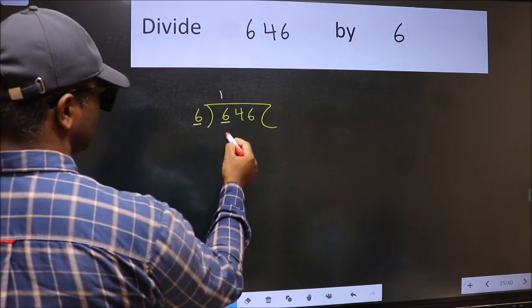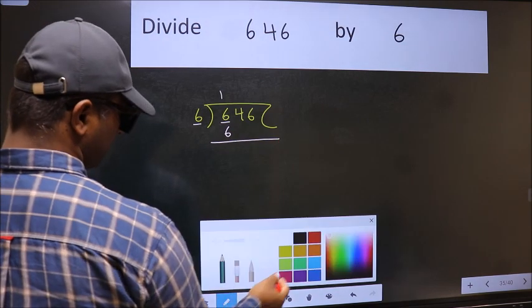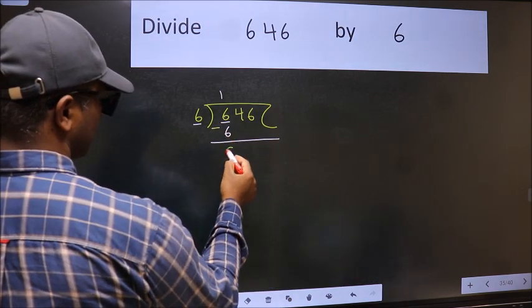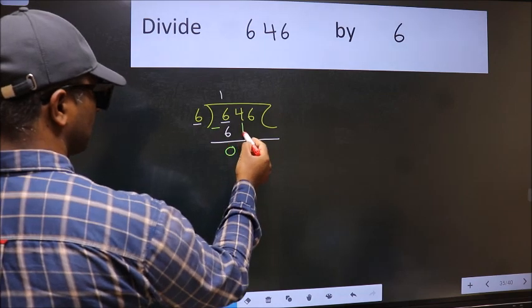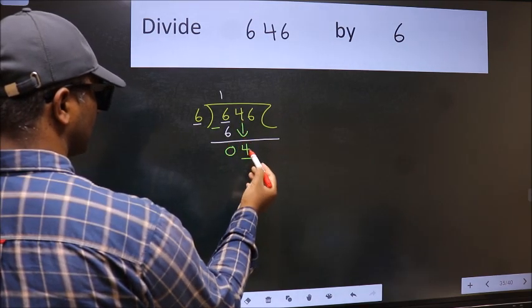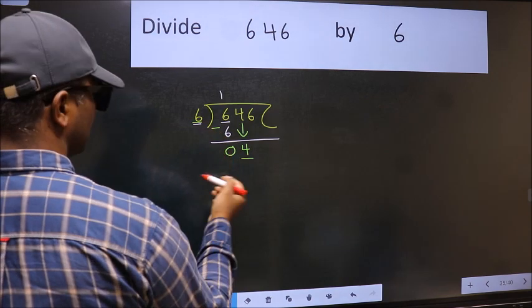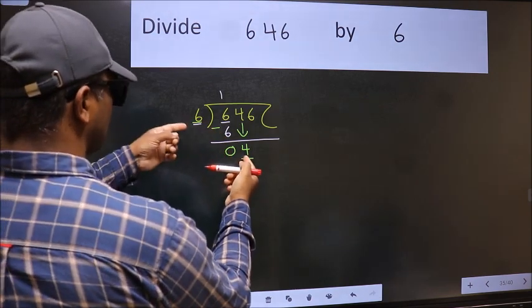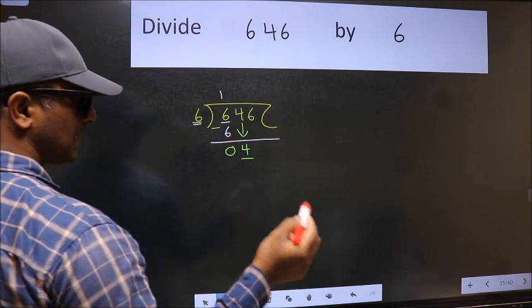6 times 1 is 6. Now we should subtract. We get zero. After this, bring down the beside number, so bring 4 down. Now here we have 4 and 6 here. 4 is smaller than 6, so we should bring down the second number.